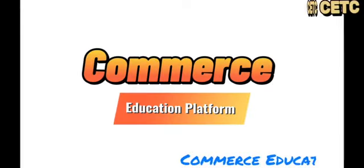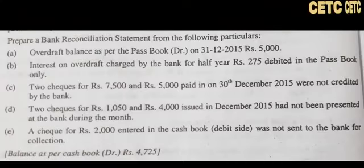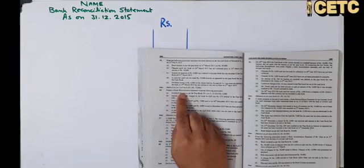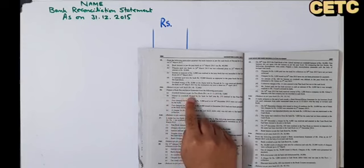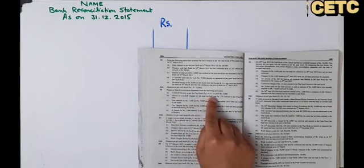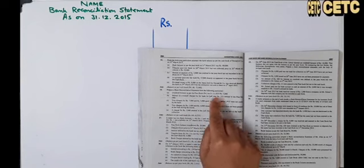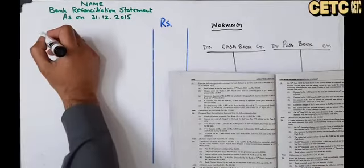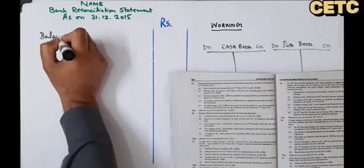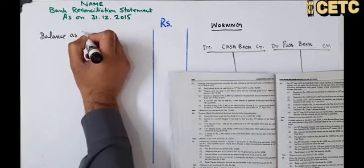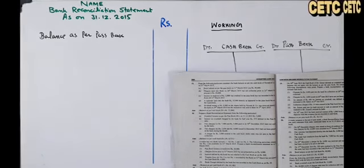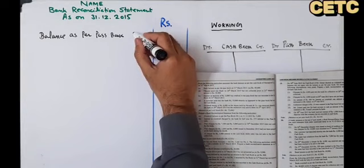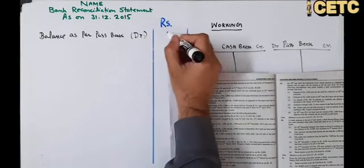Bismillahirrahmanirrahim. Commerce Education Platform, Question 16. Prepare a bank reconciliation statement from the following particulars: overdraft balance as per the passbook (debit) on 31st December 2015, rupees 5,000. سب سے پہلے ہم لکھیں گے balance as per passbook، اور اس نے بتایا ہے کہ یہ debit balance ہے — 5,000۔